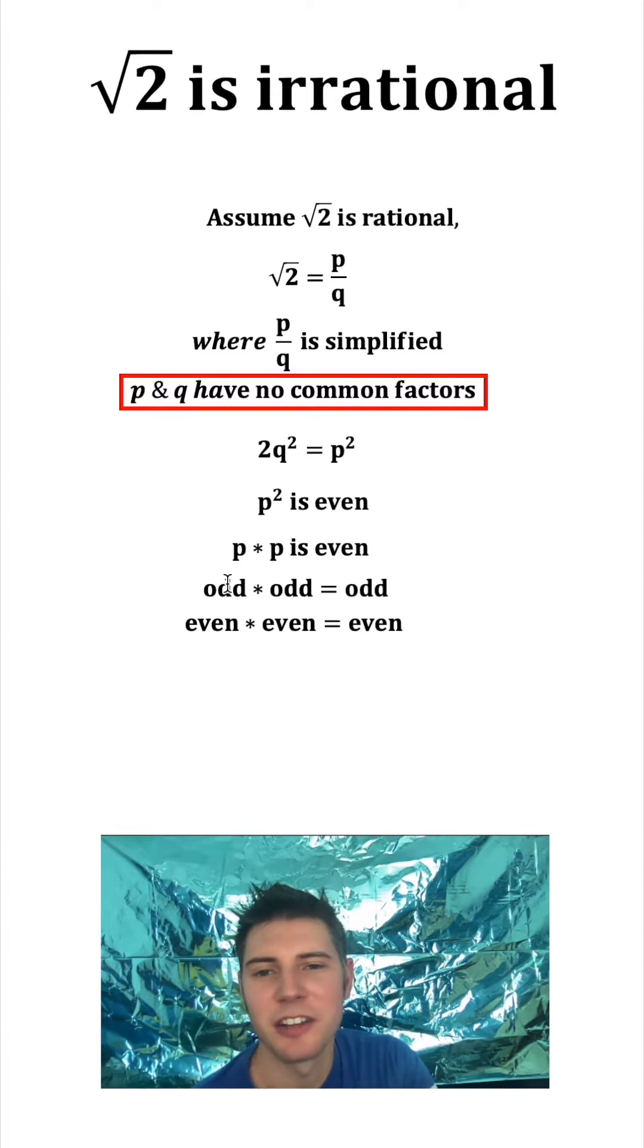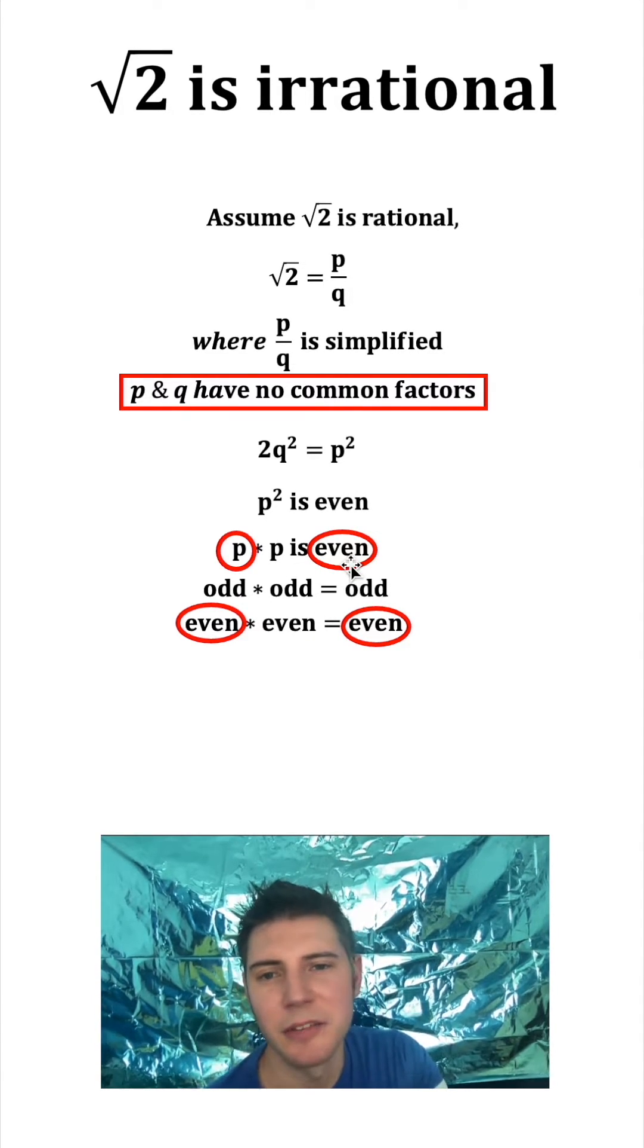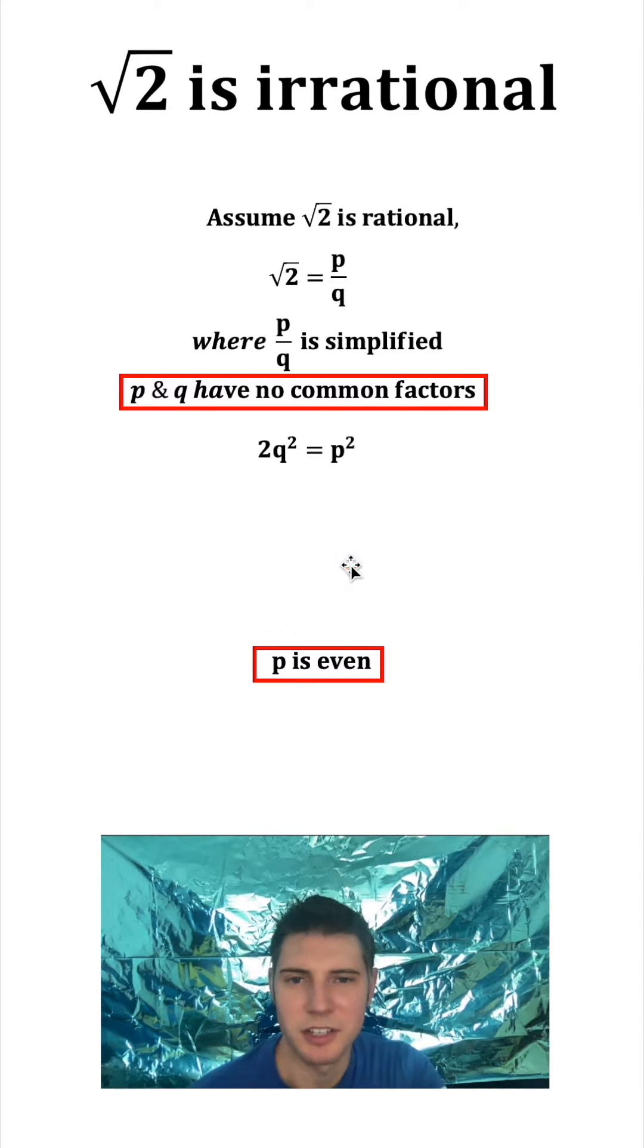P is an integer. It's either got to be odd or even. If we know this is even, that means P has to be even. And that's important, so I'll put a box around it.